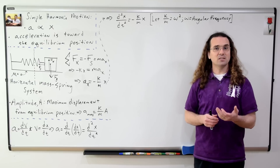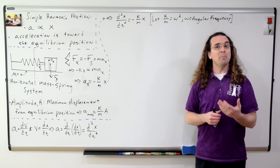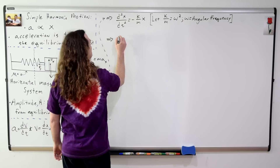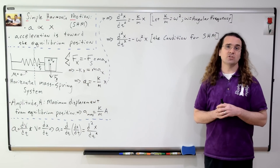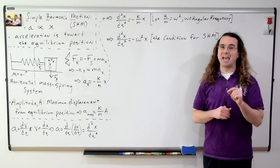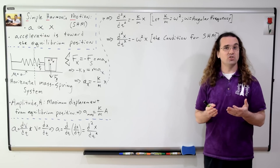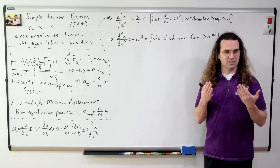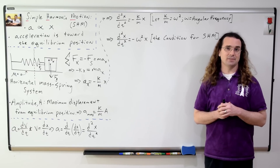And we let the spring constant divided by the mass be equal to omega squared, where omega is defined as the angular frequency. We get the second derivative of position with respect to time is equal to the negative of the square of the angular frequency times position. This is the condition for simple harmonic motion, and this equation is not on the AP equation sheet — you need to memorize it.